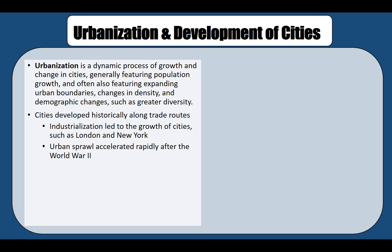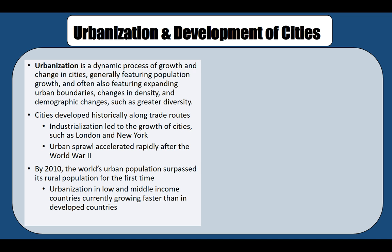Early cities were established along trade routes or at points where the movement of goods shifted from one mode of transportation to another, such as at river and ocean ports. The main form of travel was walking, so people needed to live near where they worked, traded, and prayed. Compact, high-density settlement was the norm. The need to move goods and people locally led to the development of street networks for use by wagons and carriages.